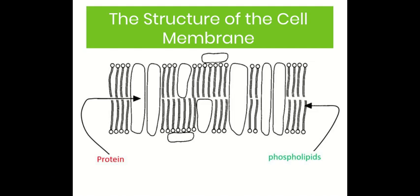The other molecules you can see — these white ones going across the membrane — some span the whole way across, some only go through half of it, and some sit on the outside. Although these have different roles, some of which you'll learn about later in the course, for now these are all proteins, and that's all you need to know. To summarise: the cell membrane is composed of two substances — proteins and phospholipids — and you should be able to label and draw the cell membrane.